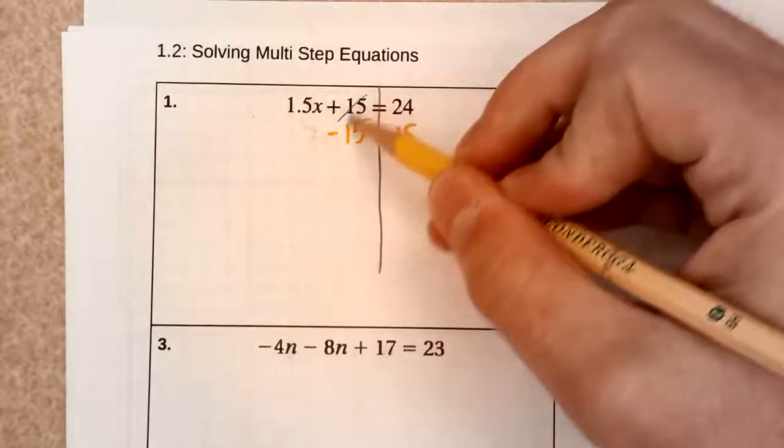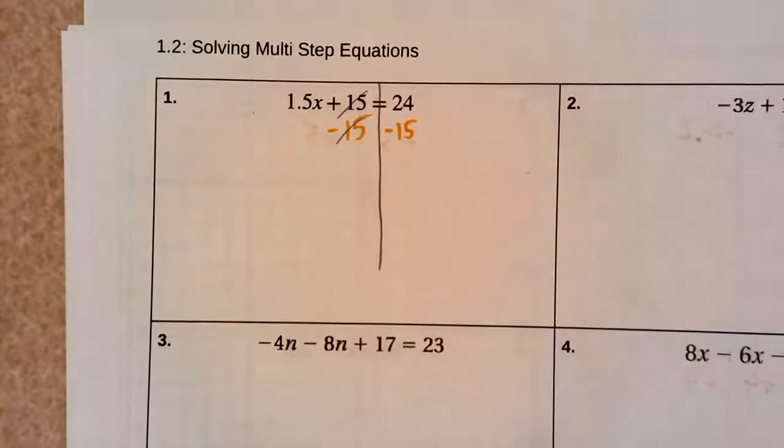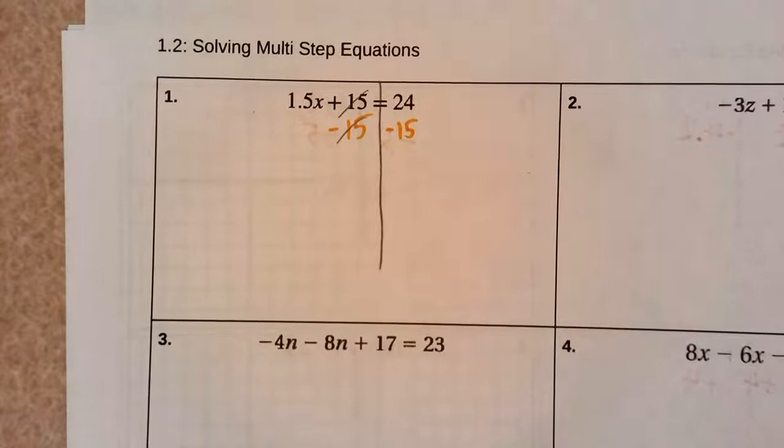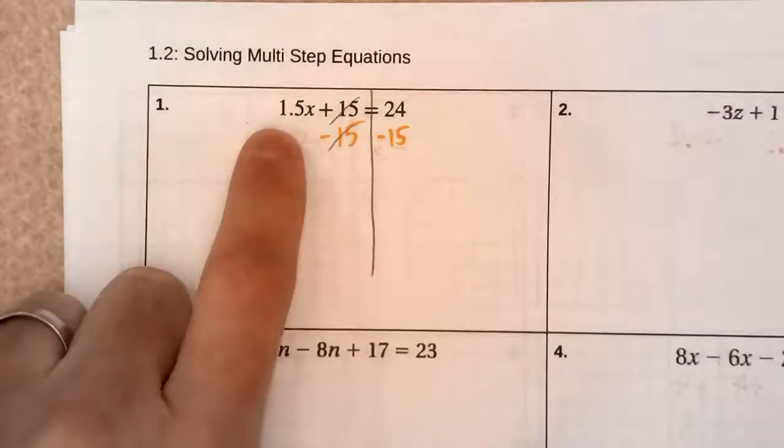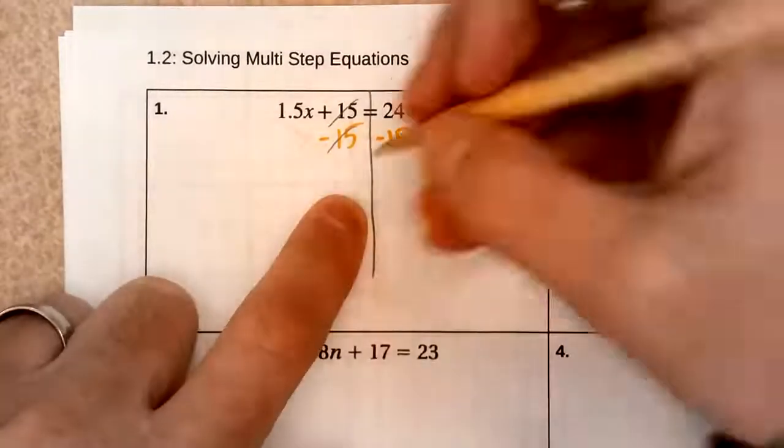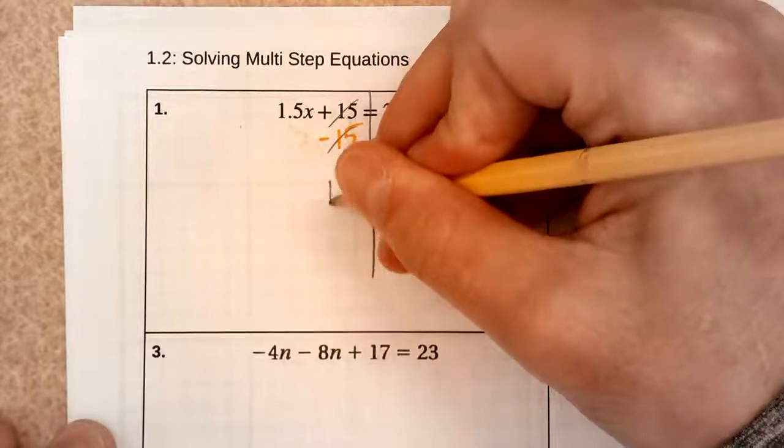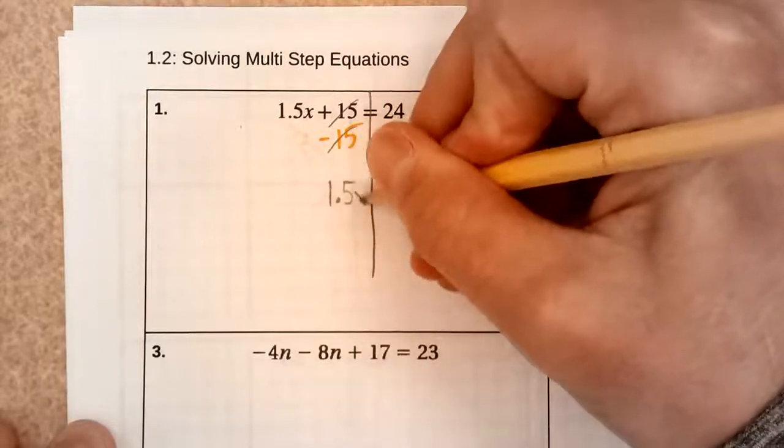Positive 15 and minus 15, that cancels out. That's exactly what we want. We want it to cancel out. I still have this 1.5x though, so let's carry that down. That's still there. 1.5x.